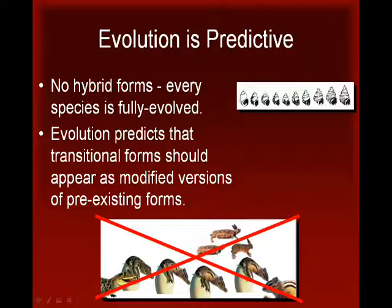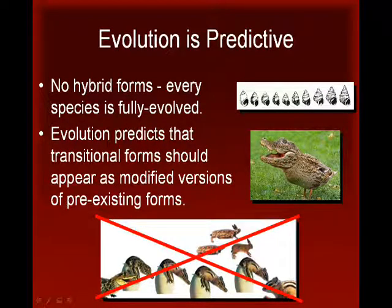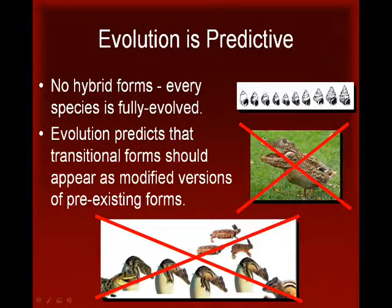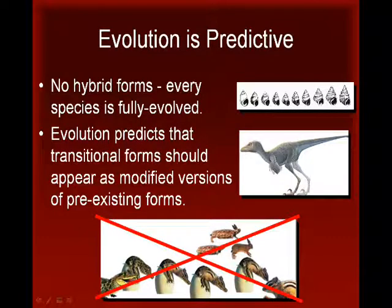Consequently, the reason that we do not find evidence of bizarre animal amalgamations in the fossil record, like Kirk Cameron's Crocoduck example, is because such forms could not possibly have evolved. Indeed, the discovery of such a farcical animal in the fossil record would be regarded as evidence against evolution, not for it.